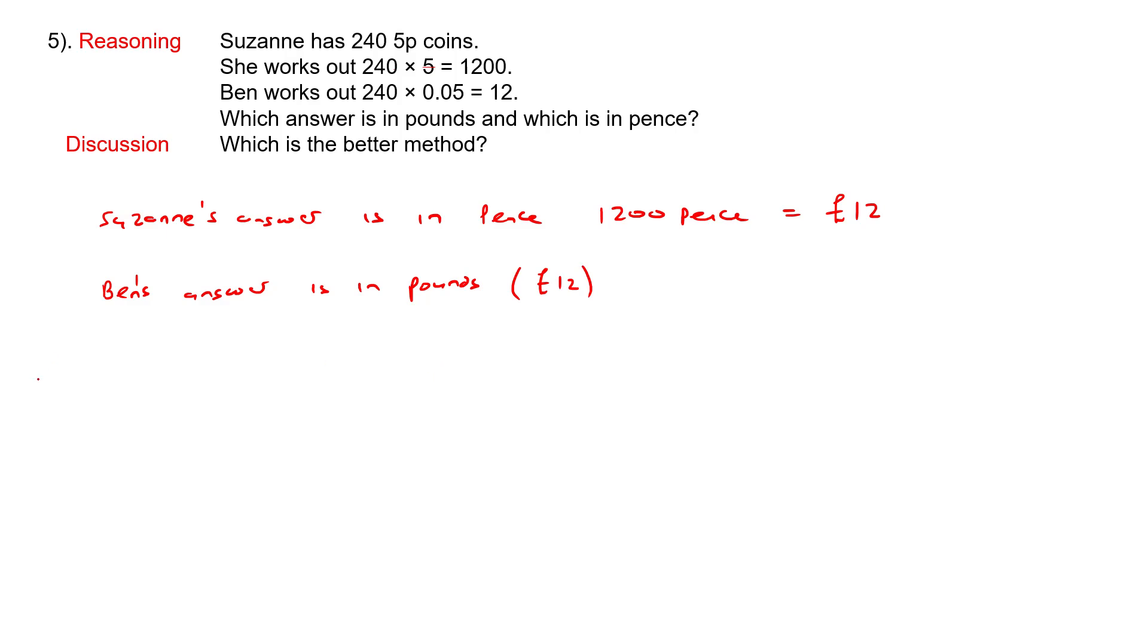Which method is better? Well, that depends on you for the calculation. Suzanne's answer is much easier because you can do 240 times 5. So it's easier, but once she's worked it out, she has to convert it back into pounds - she needs to convert her answer into pounds.